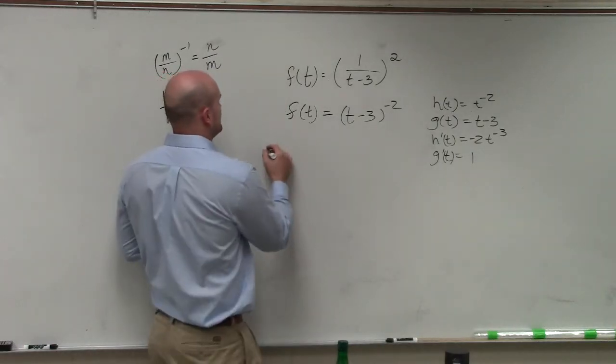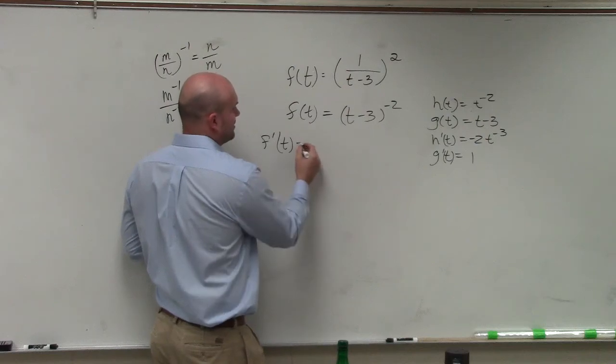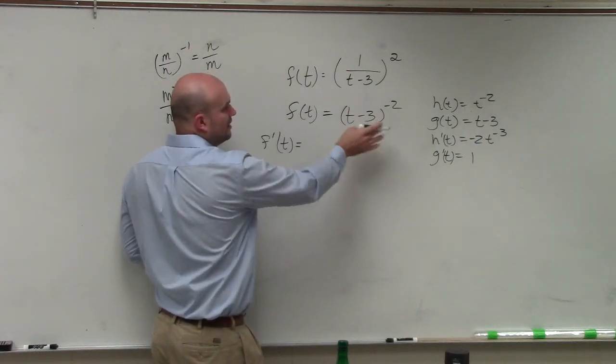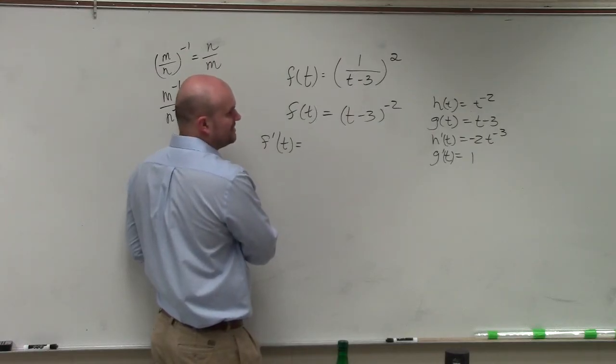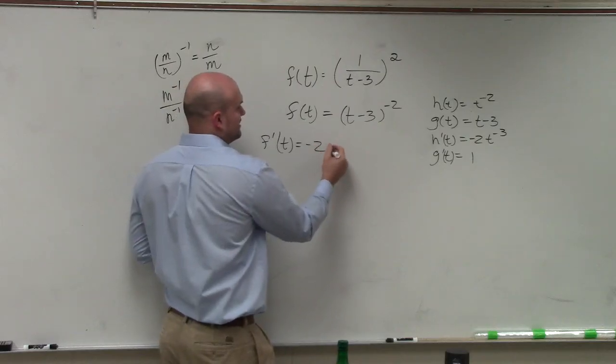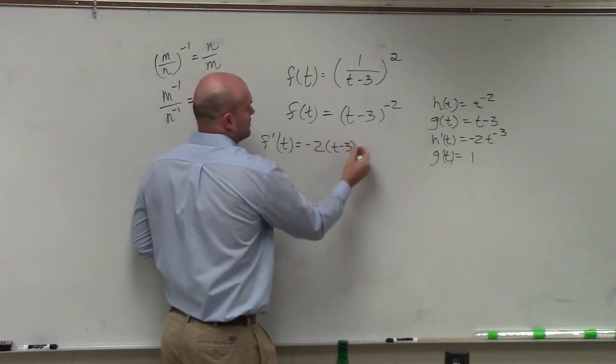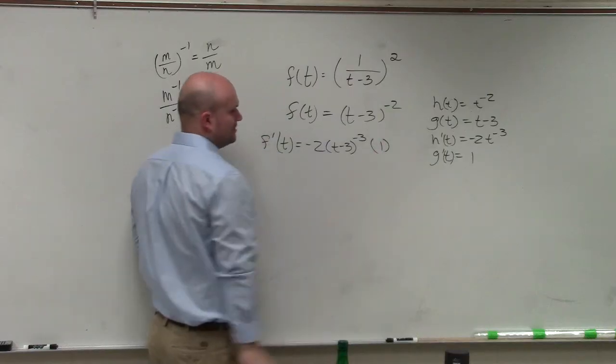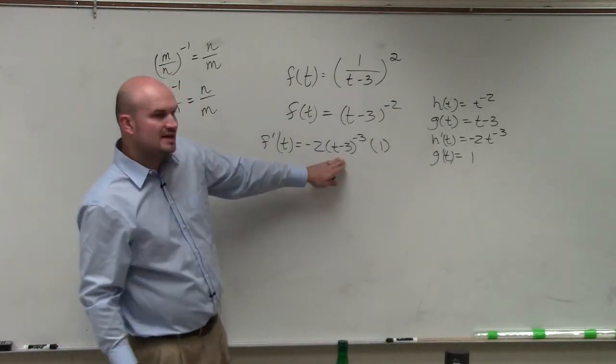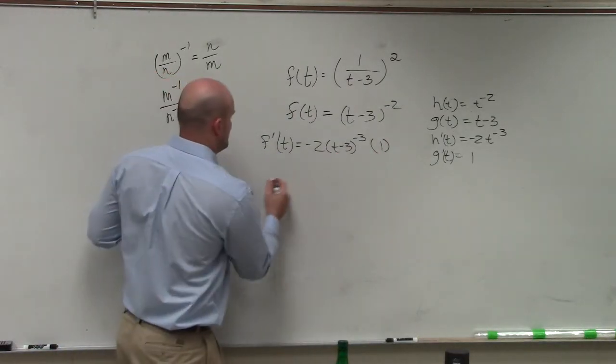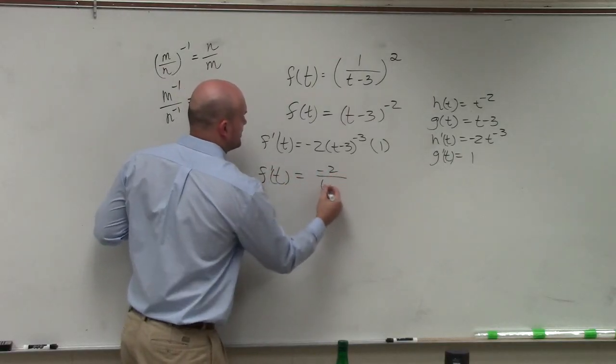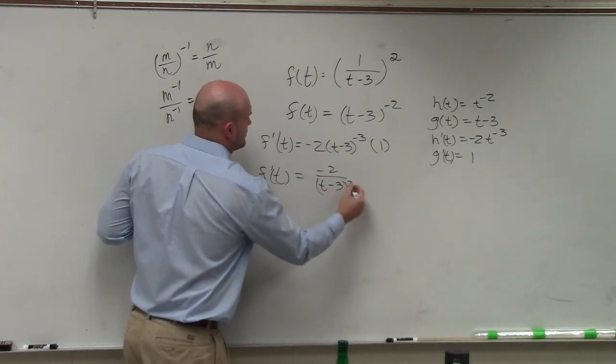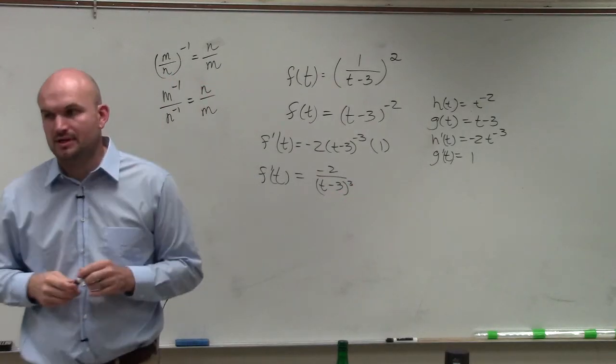So now, to evaluate my derivative using the chain rule, I'm basically going to use my h prime of t and then insert g of t, times g prime of t, which is just 1. Obviously, that's a negative exponent, so I can rewrite that below. So f prime of t equals negative 2 over t minus 3 cubed. And then that'd be it.